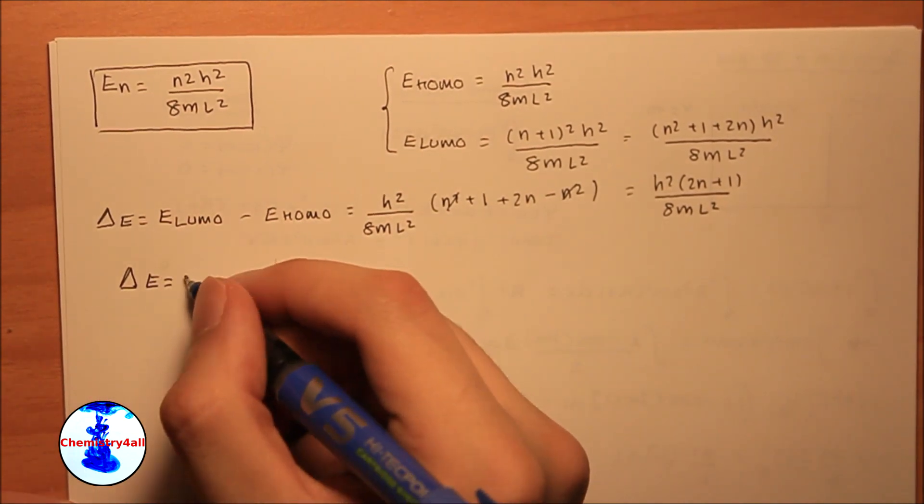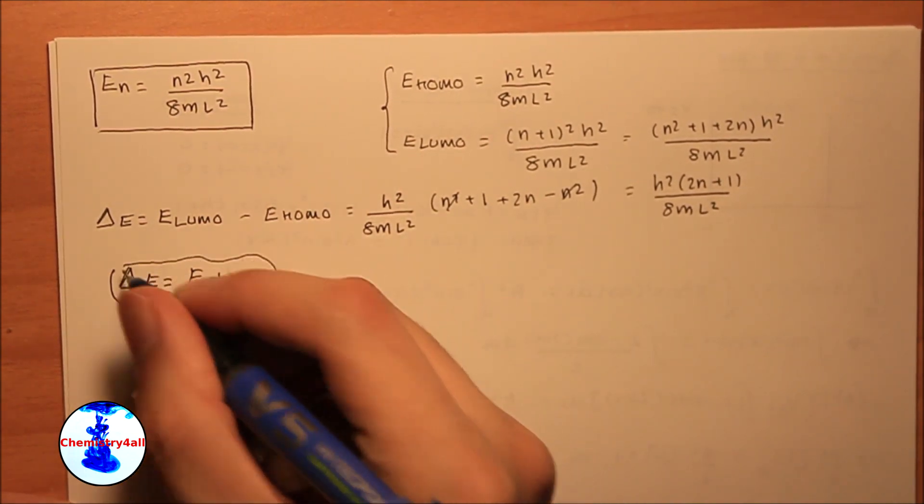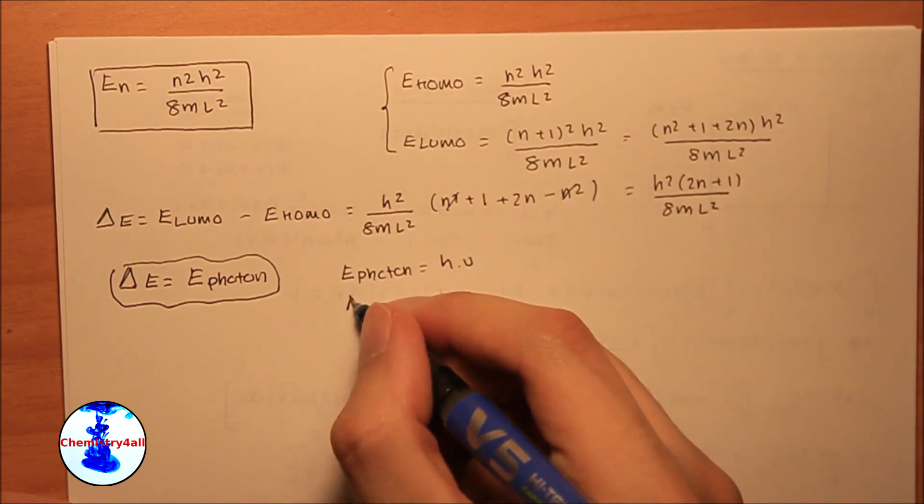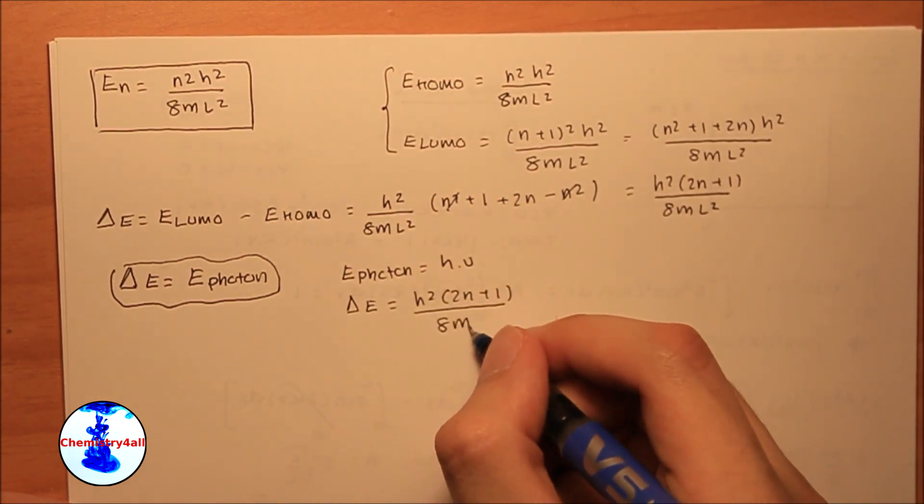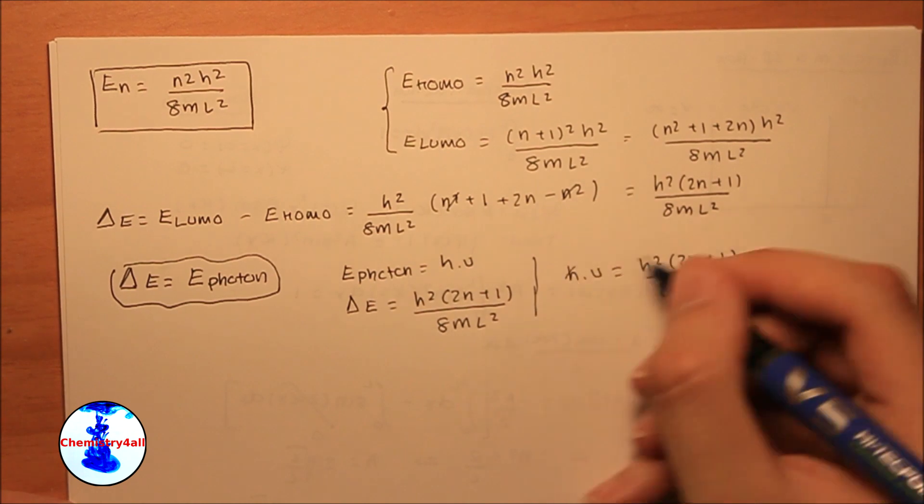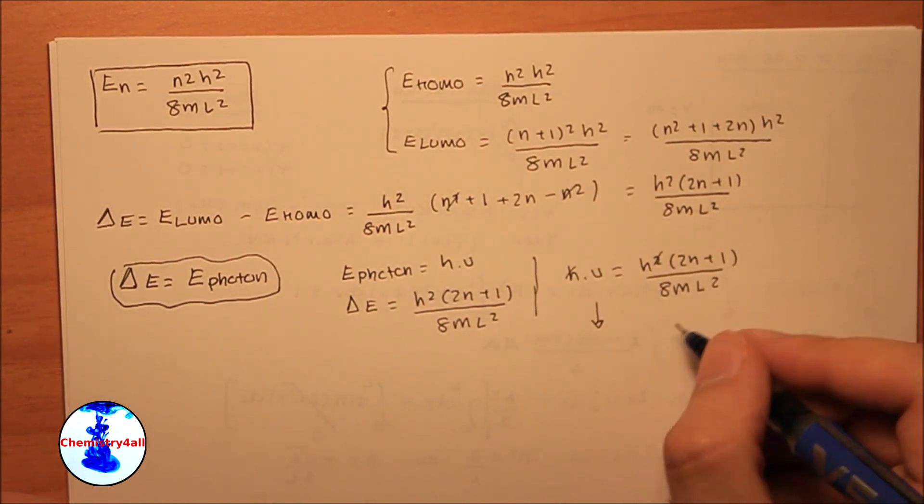And now we have to remember that a photon will only be absorbed or emitted by a given system if its energy is exactly equal to the difference in the energy between the levels involved within the electronic transition.